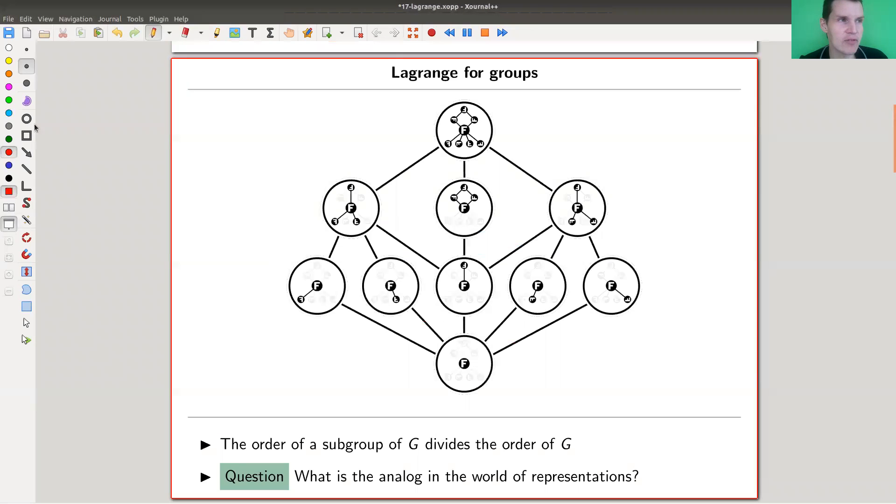So Lagrange's theorem. Here's my picture for Lagrange's theorem. I have my group D4 here, and D4 has certain subgroups, quite a few of them. For example, that's Z4, these are Z2 subgroups here, this is the trivial and so on. Lagrange's theorem for groups says that the order of a subgroup always divides the order of the group.